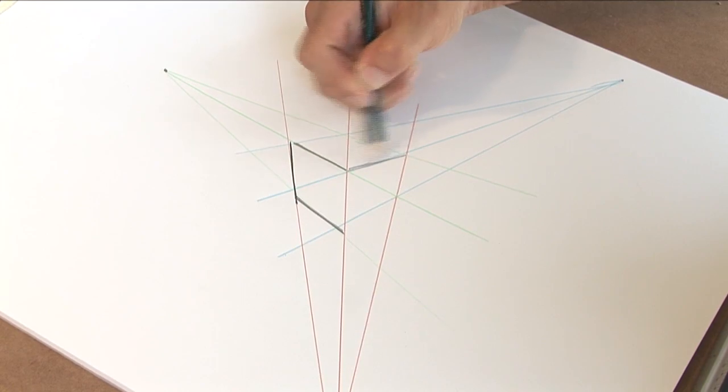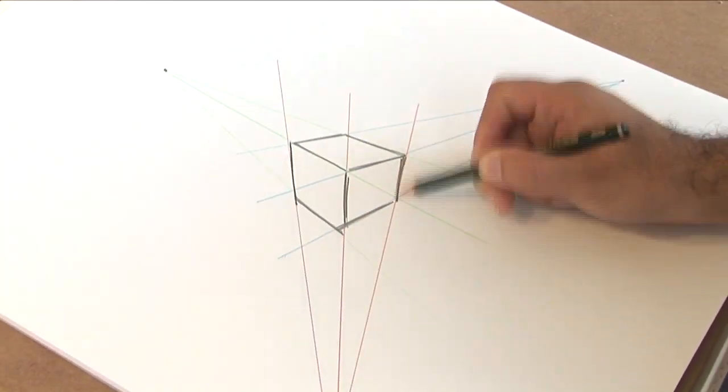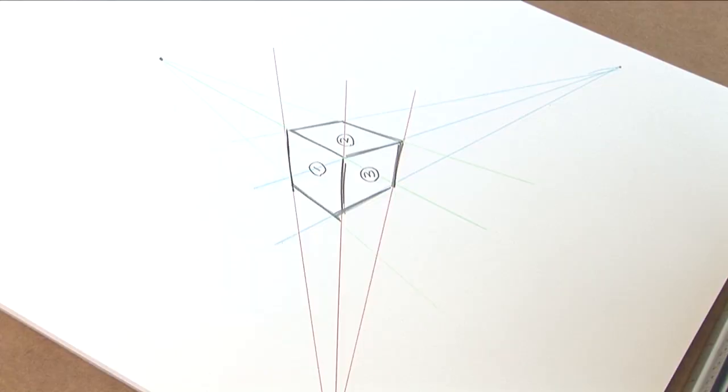A line going down and across again. And there's our cube in three-point perspective.